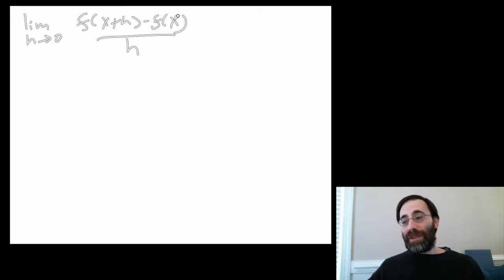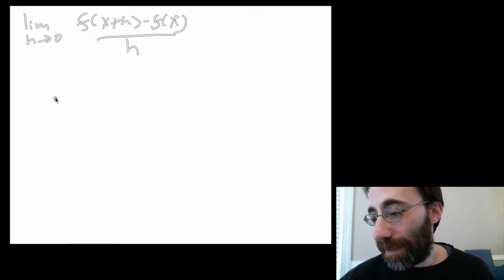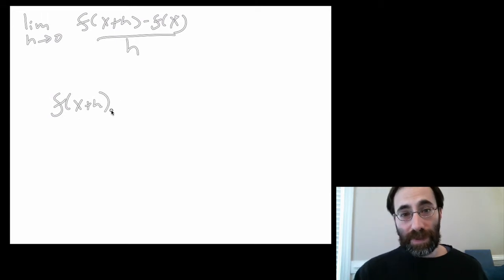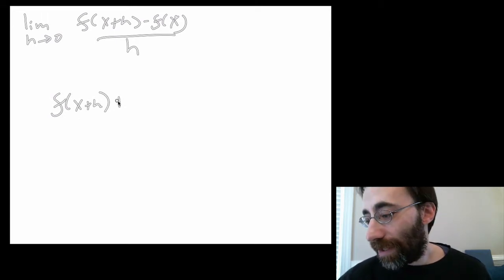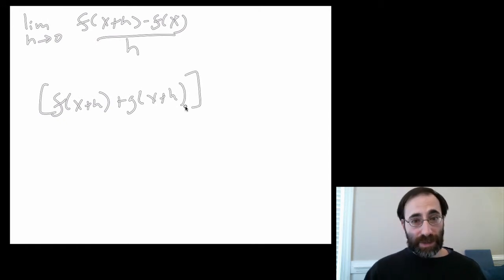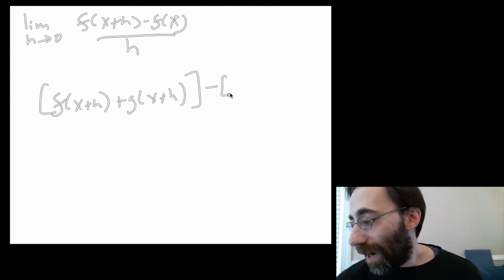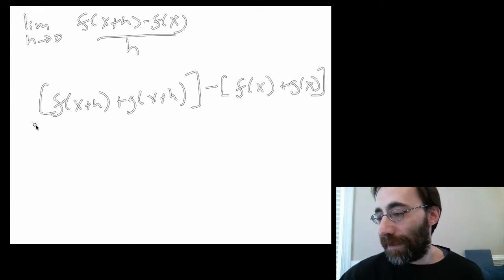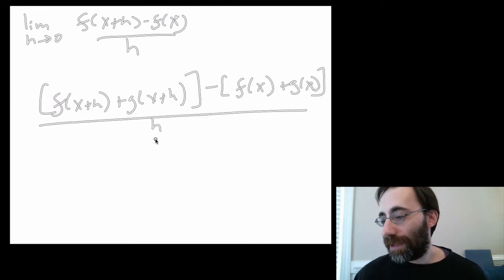What if we had two functions there? Well, let's see. What if your big function was actually this? Well, you'd evaluate it at x plus h and you subtract the evaluation at x and here'd be your big function. You divide by h and take a limit.